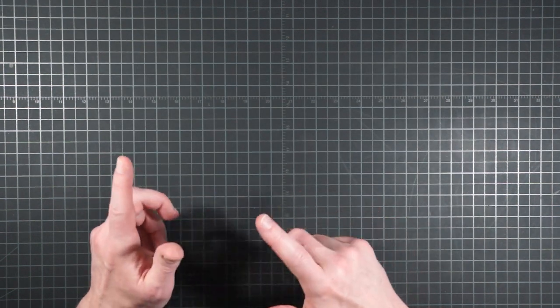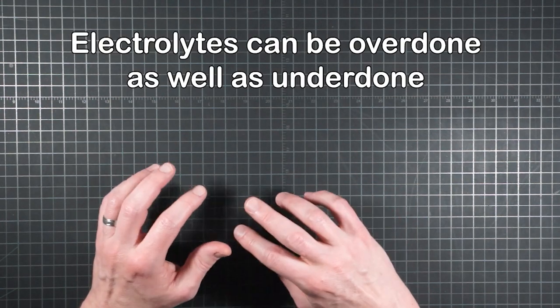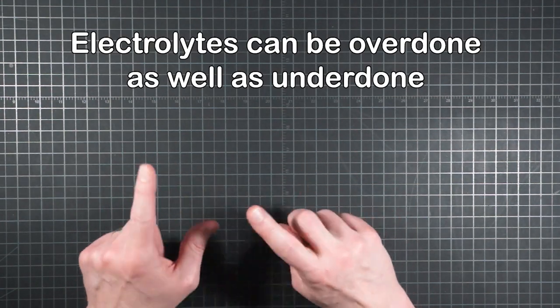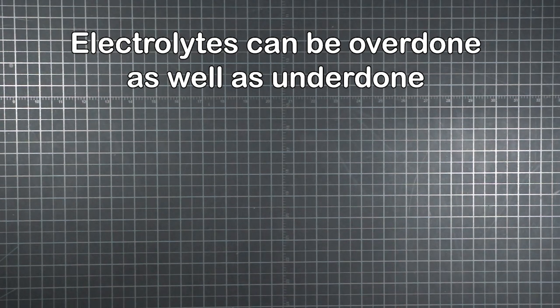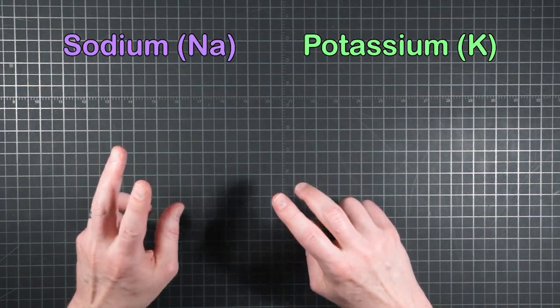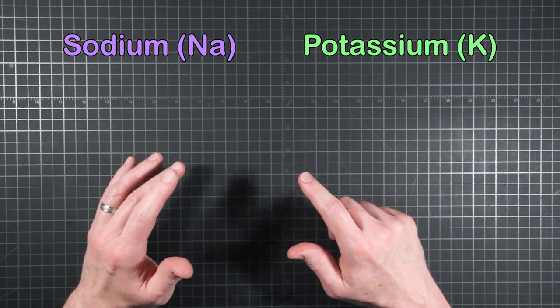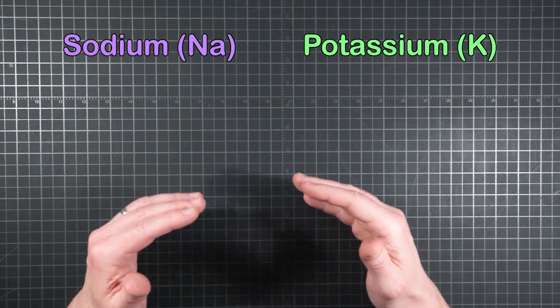So as we design a sodium-potassium calculator, it needs to be kept in the back of the mind that all of these valuable electrolytes can be overdone as well as underdone. Okay, so we've identified sodium and potassium as the two electrolytes of primary interest for supplementation during those circumstances where sweat losses exceed your normal dietary intake.